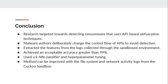This paper is targeted toward detecting ransomware that uses API-based obfuscation techniques, where malware authors deliberately change the control flow of APIs to avoid detection from anti-malware software. Researchers extracted features from logs collected through the sandbox environment. Experimental results showed that an acceptable accuracy greater than 99% was achieved using a KNN classifier with hyperparameter tuning. This model yields high-accuracy detection of unknown ransomware based on API calls. This method can be further expanded with file system activity and network activity logs from the sandbox. Future work includes collecting more ransomware samples and conducting experiments using other ML-based approaches, including deep learning techniques.